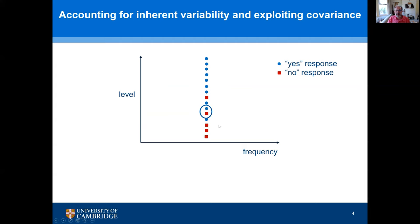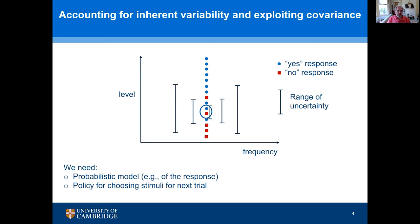We estimate that the threshold falls somewhere within this region with a certain area of uncertainty. We also know that if you test at an adjacent frequency, the threshold there is likely not very different, but the range of uncertainty increases as the frequency gets further away from your initial test frequency. We talk about this as covariance across frequencies — thresholds tend not to vary greatly from one test frequency to the next. To deal with this, we need a probabilistic model and a good policy for choosing the stimulus for the next trial.